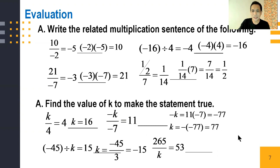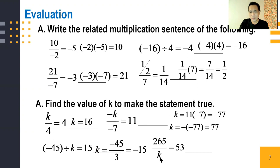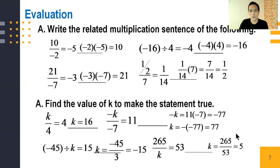For 265 over k equals 53: k is the divisor, so divide the dividend by the quotient — 265 divided by 53 equals 5. So the value of k is positive 5.